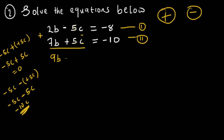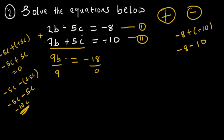So we have 9b equals minus 8 plus minus 10. Minus 8 plus minus 10 — plus times minus is minus — so minus 8 minus 10 gives minus 18. Dividing both sides by 9, 9 cancels 9, leaving b equals minus 18 over 9, which is minus 2.